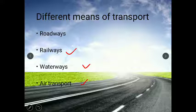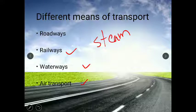The steam engine was also invented in earlier times. Before petrol and diesel, train engines ran on steam — coal was put inside, which boiled water, and the steam created pressure on the wheels, pushing the train forward. The steam engine was invented by James Watt, who was from England.